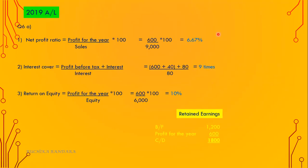2019 A-level, question number 6, A part. Net profit ratio equals profit for the year over sales, into 100. Profit for the year is 600 over sales of 9,000 — into 100, it's 6.67%. Number two: interest cover equals profit before tax plus interest, divided by interest. Profit for the year 600 plus income tax 40 gives profit before tax of 640. Plus interest 80, divided by 80 — the answer is 9 times.